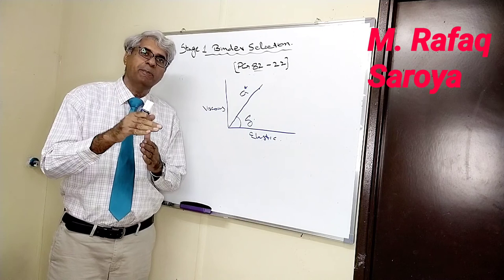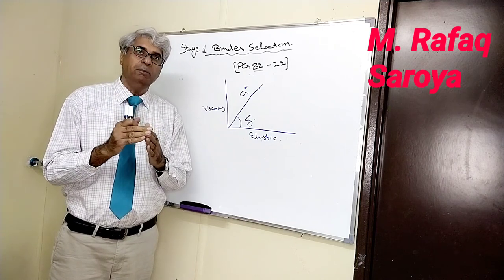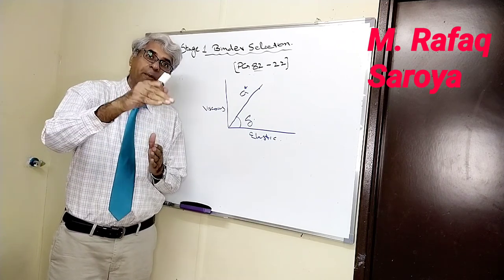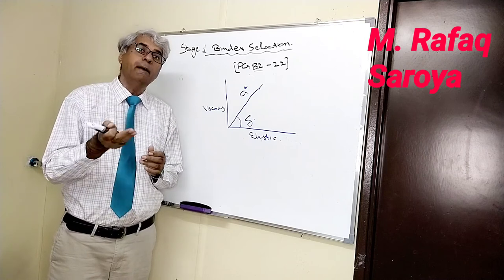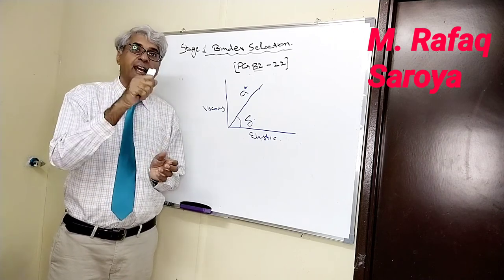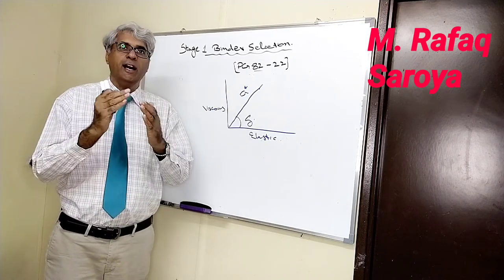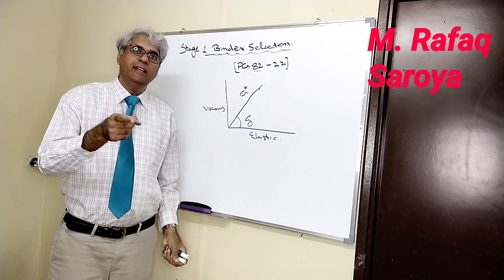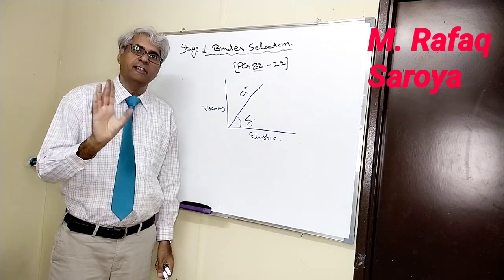are the viscous elastic parameter. Sometimes, because they have to study the property of rutting, they have to study the property of fatigue cracking, so these two are also known as fatigue cracking parameter and rutting resistance parameter.